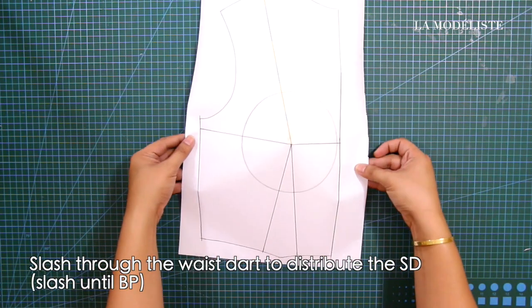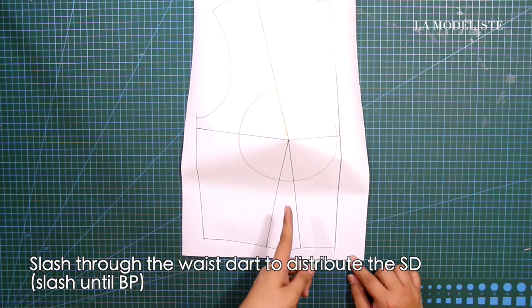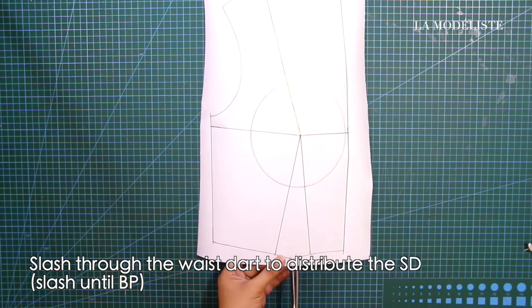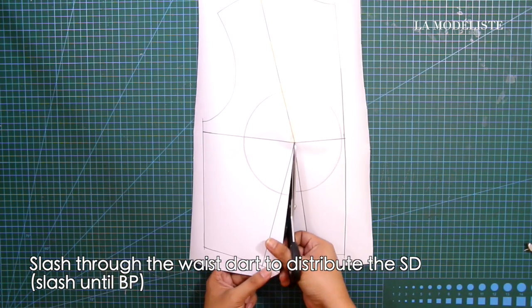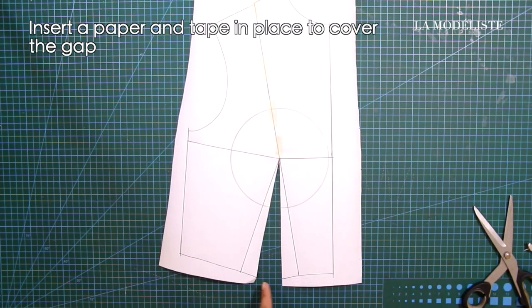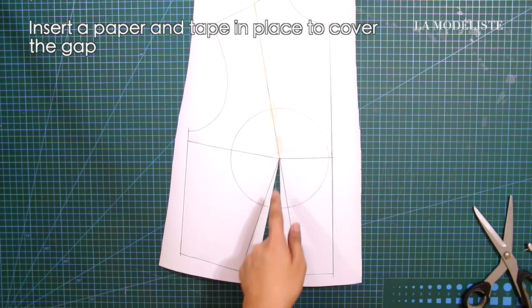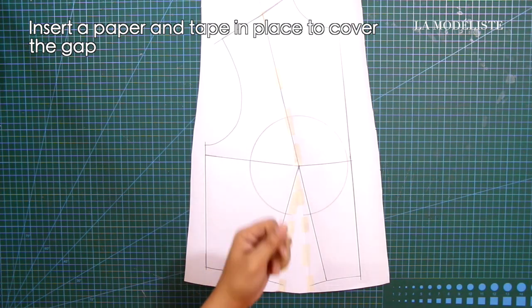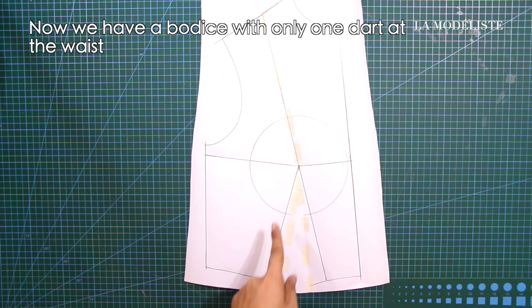And slash through the waist dart to distribute the shoulder dart. Slash until the bust point. Next, insert a paper and tape in place to cover the gap. Now we have a bodice with only one dart at the waist.